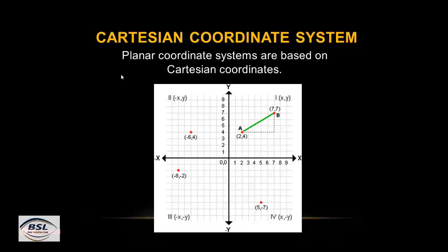The Cartesian coordinate system is the basis for planar coordinate systems. It has four quadrants: in the first quadrant both x and y are positive; in the second quadrant x is positive and y is negative; in the third quadrant both x and y are negative; and in the fourth quadrant x is negative and y is positive.